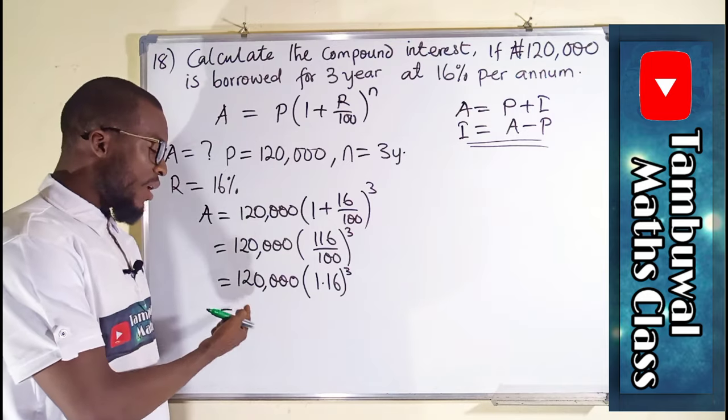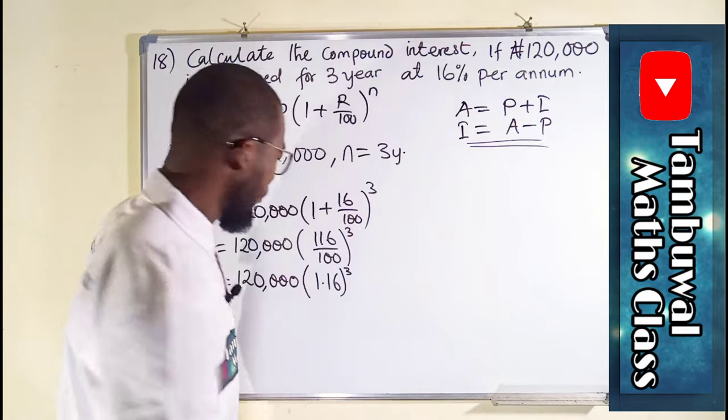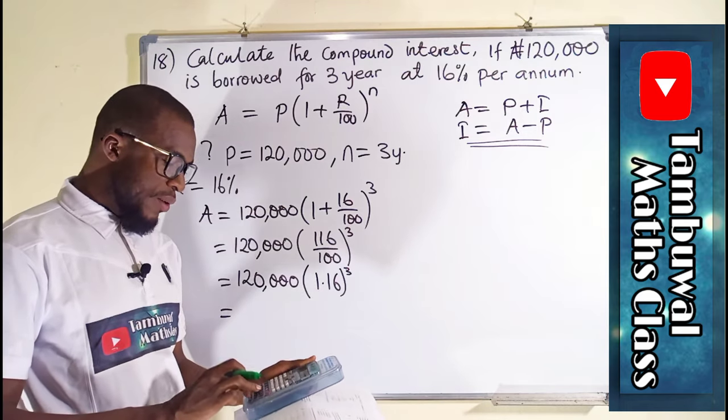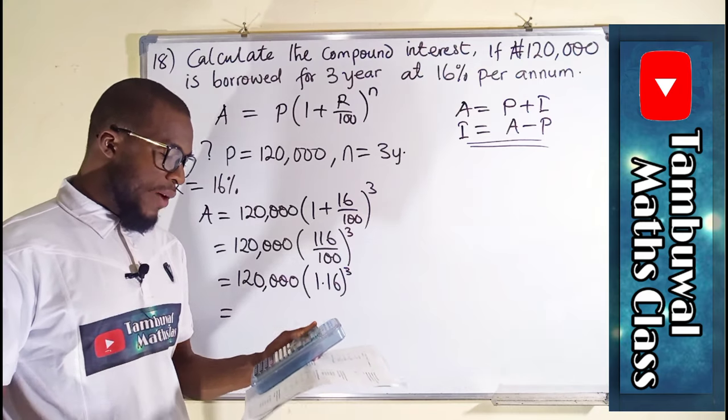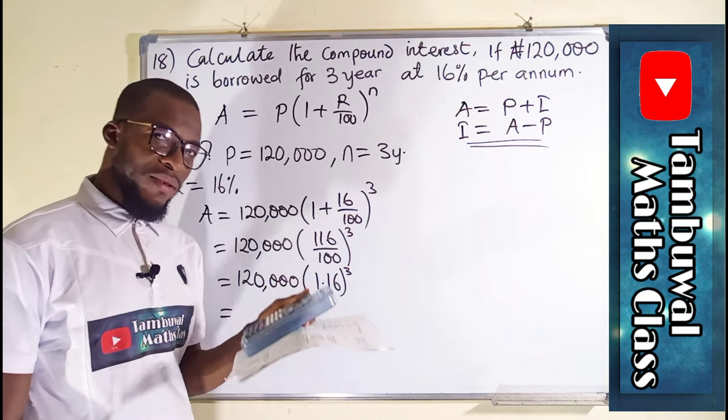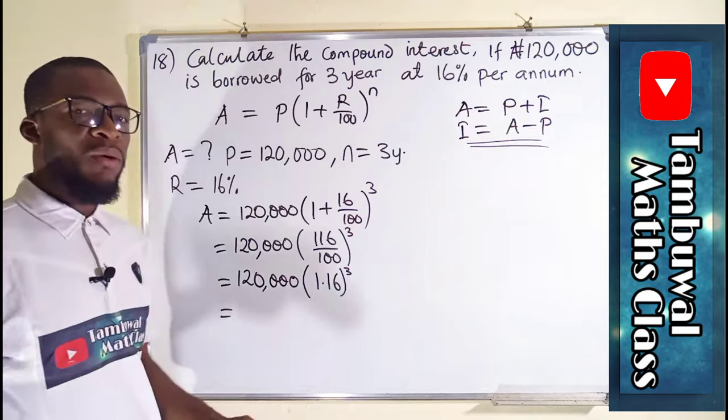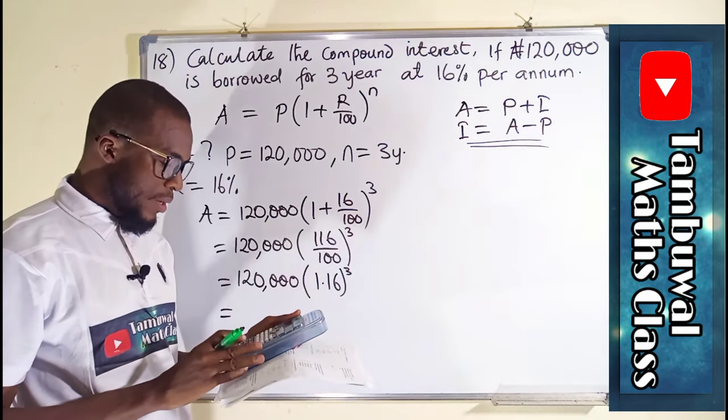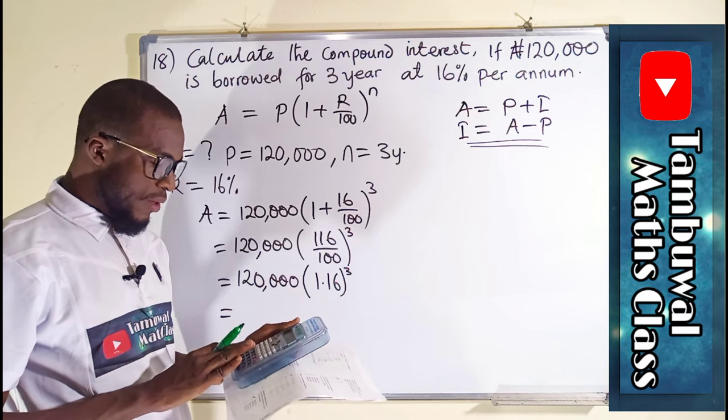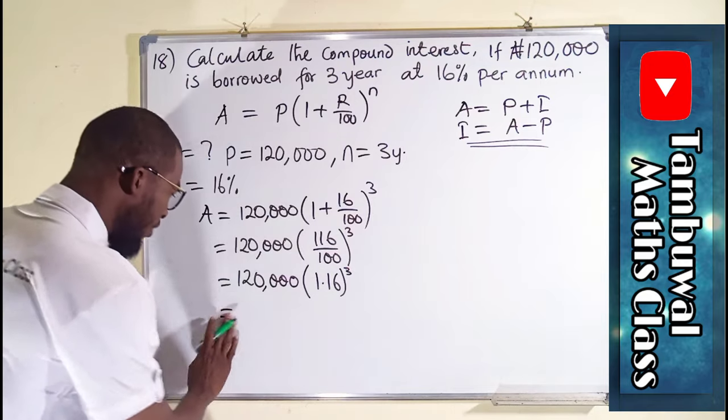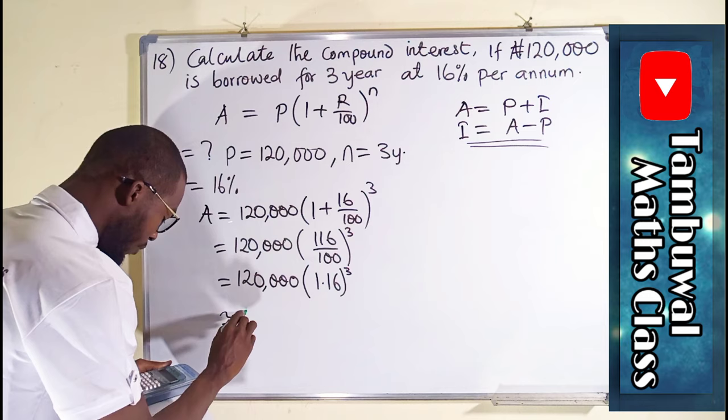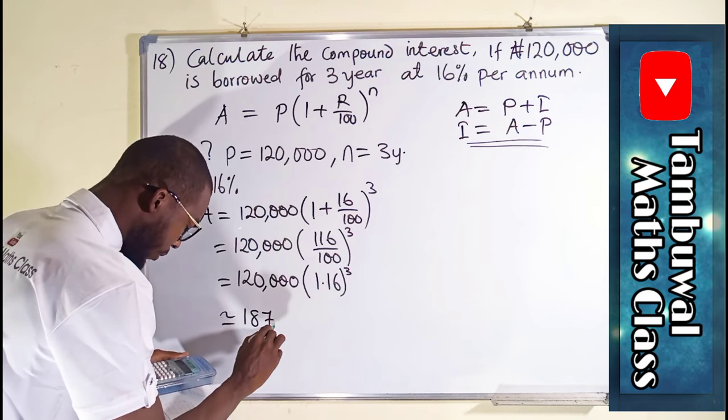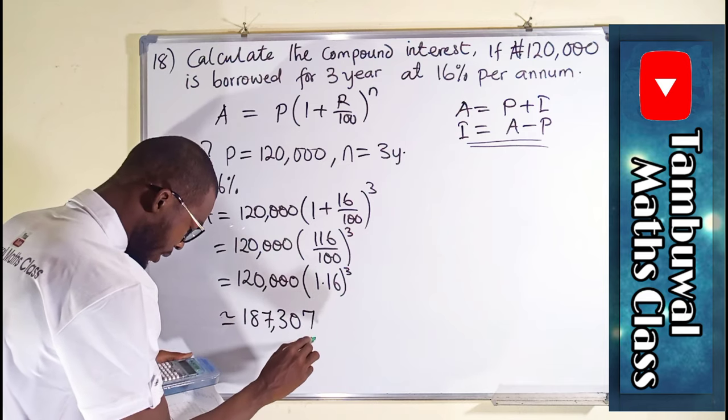So now let us see 120,000 multiplied by 1.16 to the power of 3. So we first of all have to simplify this before this. So we see 1.16 to the power of 3, and I have here 1.560896. So without writing it, we can directly multiply by 120. And don't forget you are dealing with objective questions, so you don't have to write all these steps. Of course, you can skip some if you know it up ahead.